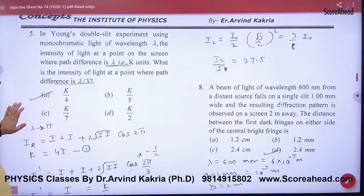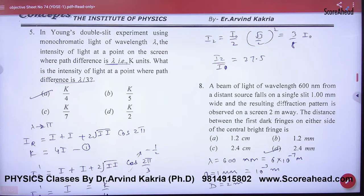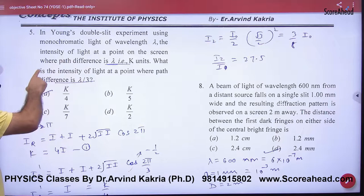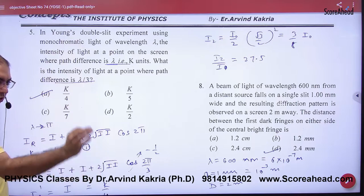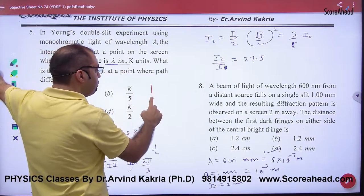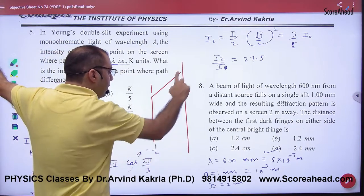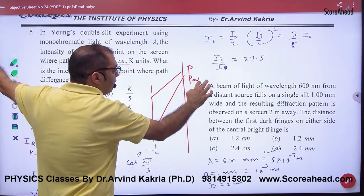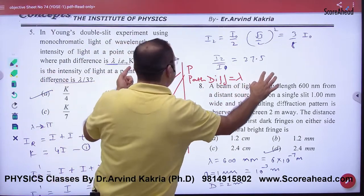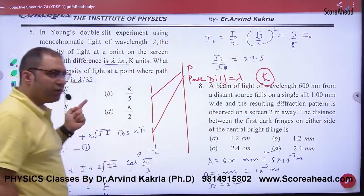Question number 5. In YDSC experiment using monochromatic light of wavelength lambda, intensity of light at a point on the screen where path difference is lambda is k units. This is the P point. At P point, the path difference is lambda. So where the intensity, the resultant intensity, is k.